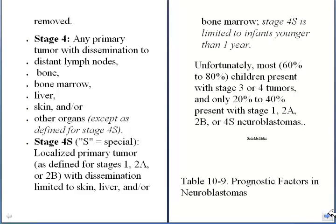Unfortunately, 60% to 80% of children present with stage 3 or stage 4 tumor, which are the high-risk stages. Only 20% to 40% present with stages 1, 2a, 2b, or 4s neuroblastomas, which are not considered high-risk.